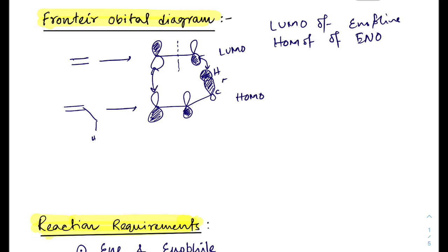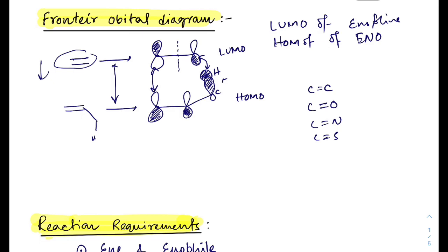This is the basic fundamental of the ene reaction. When the enophile is C=C, if we change C1 carbon to oxygen giving C=O, or to nitrogen giving C=N, or to sulfur giving C=S, as the electronegative group is added, the LUMO energy decreases and the energy gap between the HOMO and LUMO decreases.